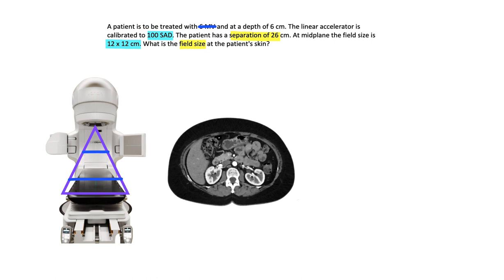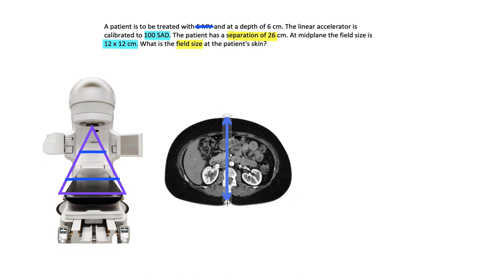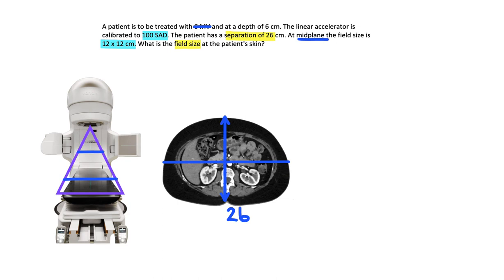Now let's first find the SSD. When we're talking about separation, we are talking about the distance from the anterior part of the patient where the beam would enter to the posterior part where the beam would exit. This is an axial slice of the patient's anatomy. In this equation, from this top point to this bottom point would be 26 centimeters. But we're treating at midplane, which means directly in the middle of the patient. So we need to find the distance from the entrance point to the isocenter.